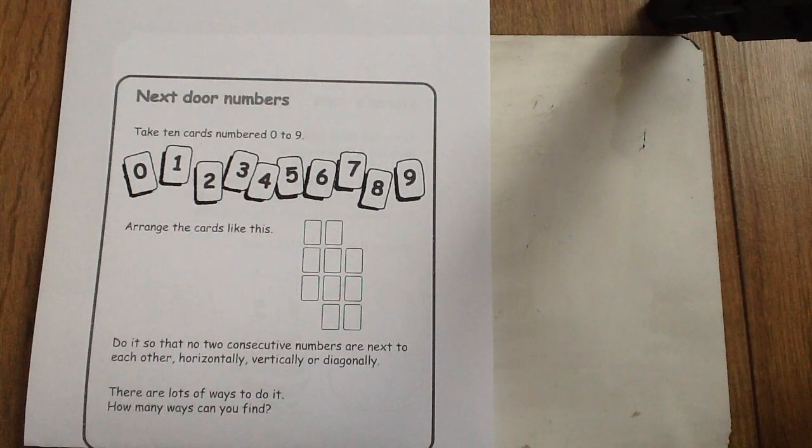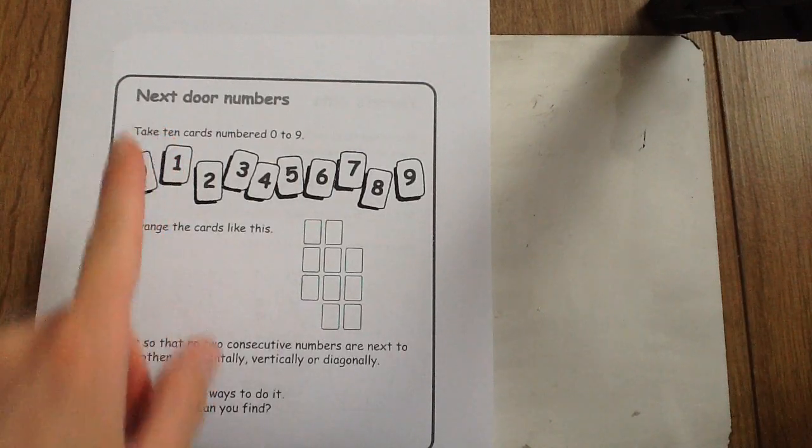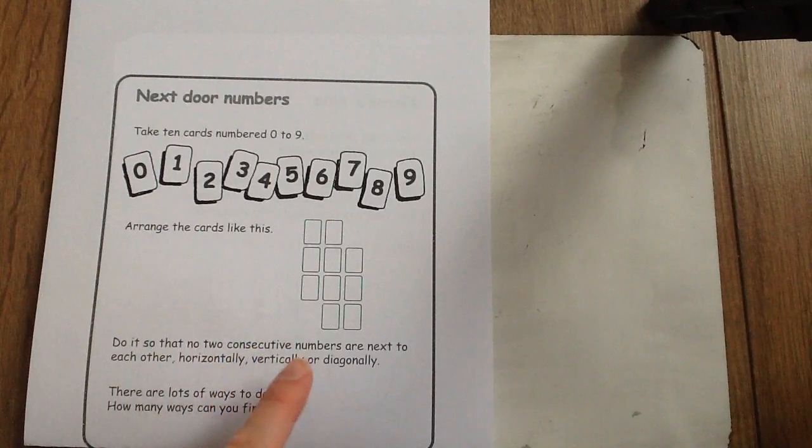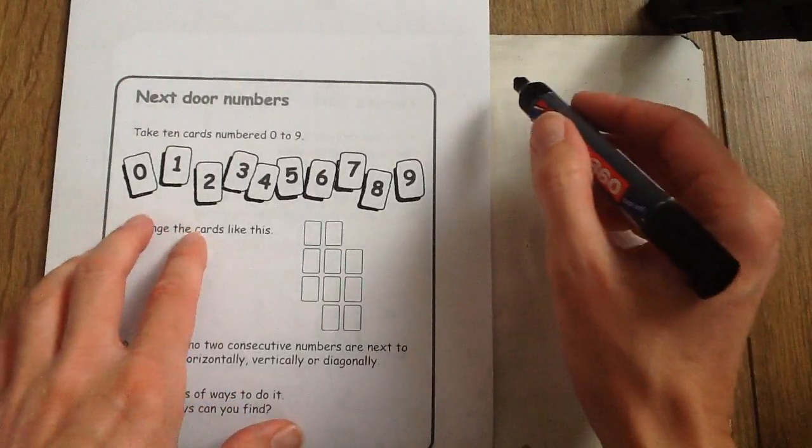Hello and welcome to this week's Math Challenge for Years 3 and 4. This week your challenge is called Next Door Numbers because we are thinking about consecutive numbers. Can you remember what that meant?